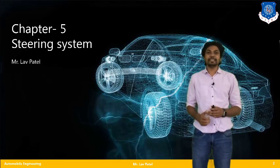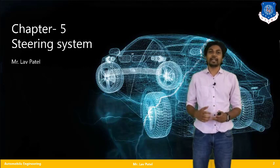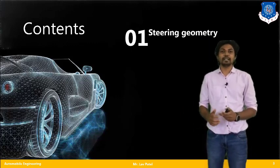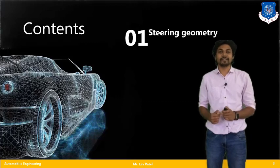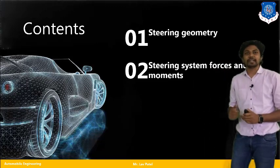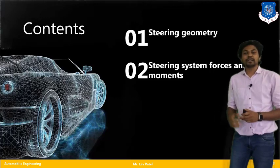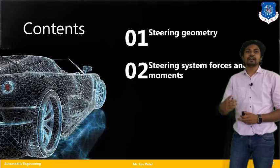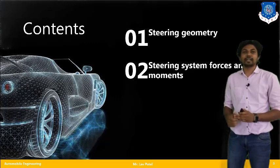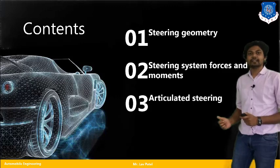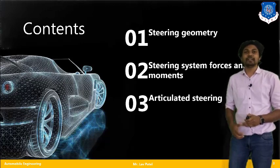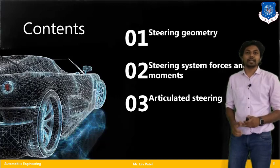In today's lecture, we will see the main steering geometry. There are several types of geometries and parameters that we have to consider to design our steering system. The second topic is steering system forces and moments — there are a number of forces and moments acting on the steering system along the X, Y, and Z axes. The third topic is articulated steering, a special type of steering used in articulated vehicles for better performance.